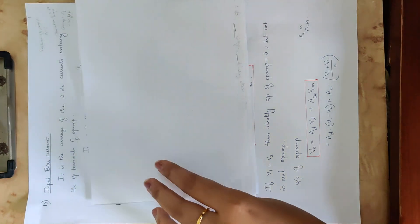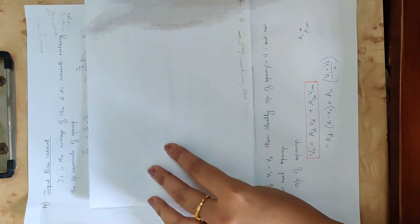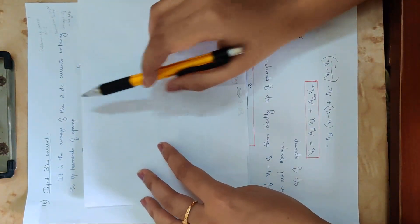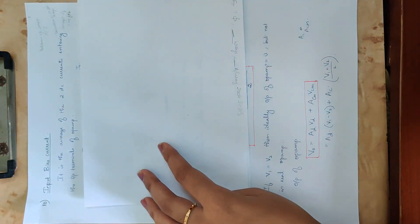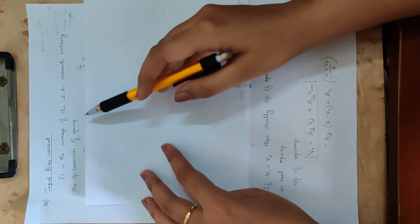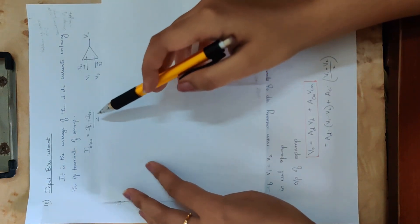The input bias current is the average of the two DC currents entering the input terminals of the op-amp.